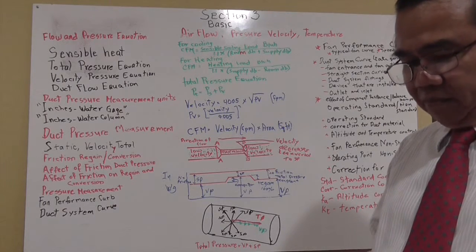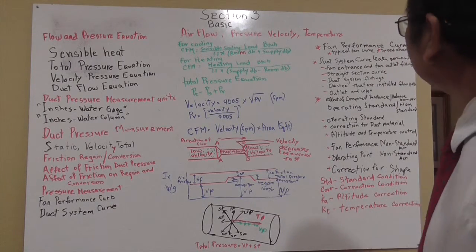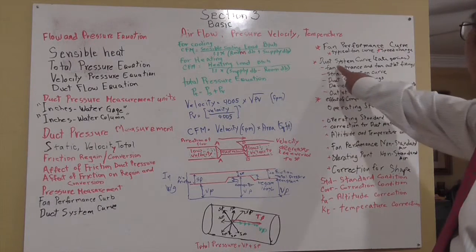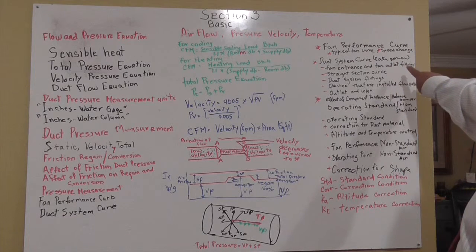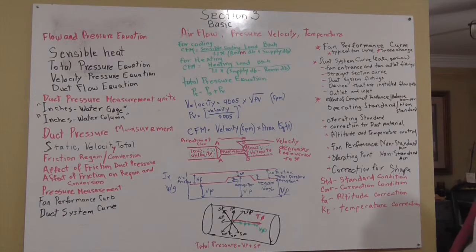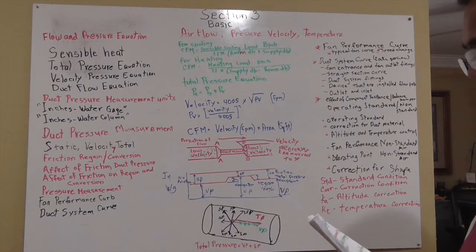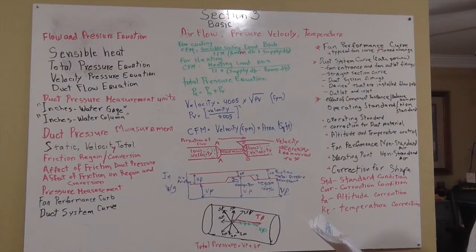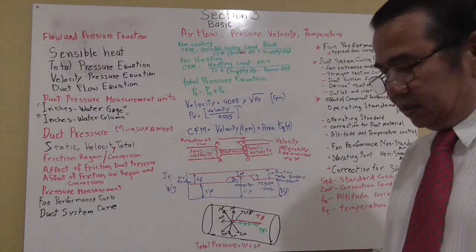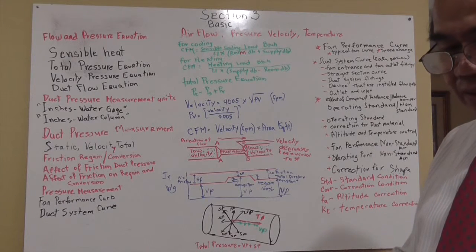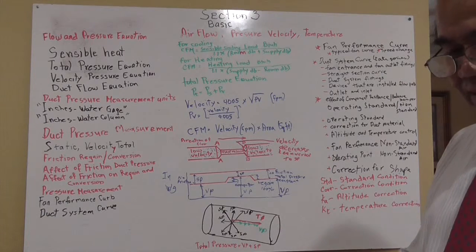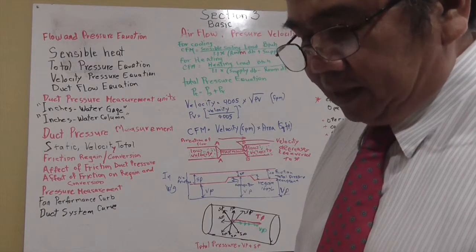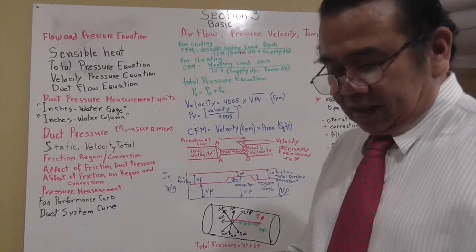Now we talk about the duct system curve categories. The duct system curve is a combination of its components producing resistance. The components we have include fan entrance and fan outlet fittings, straight sections of the duct, duct system fittings, and devices that are installed.